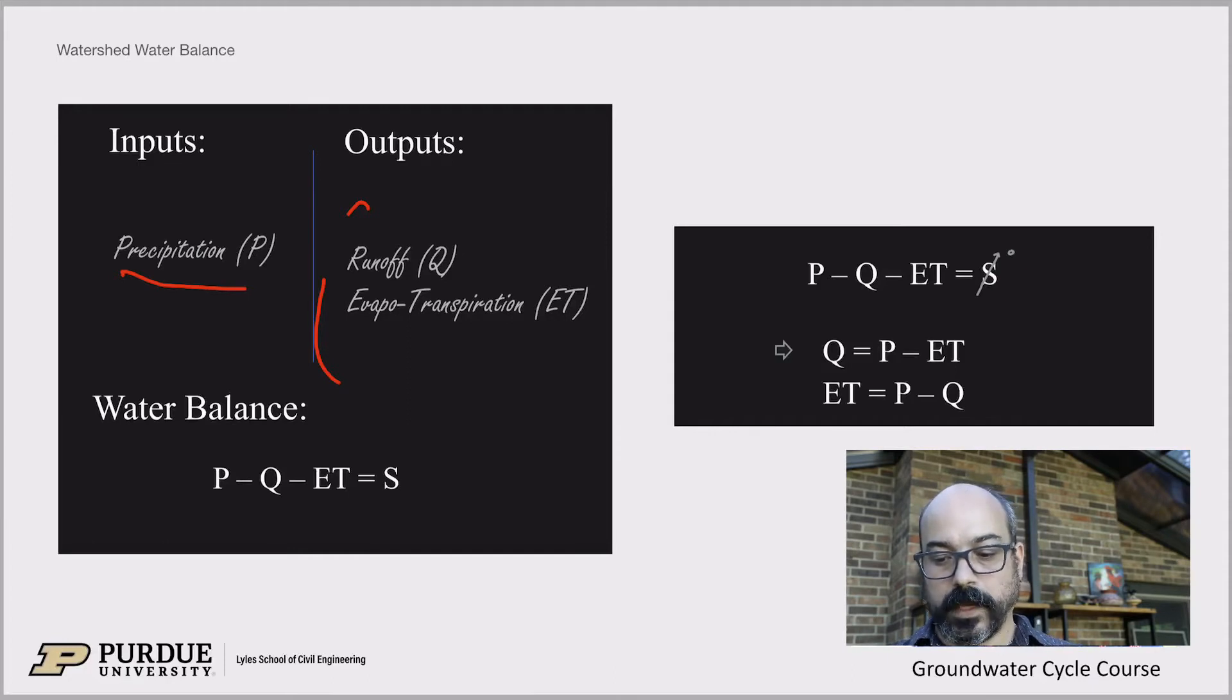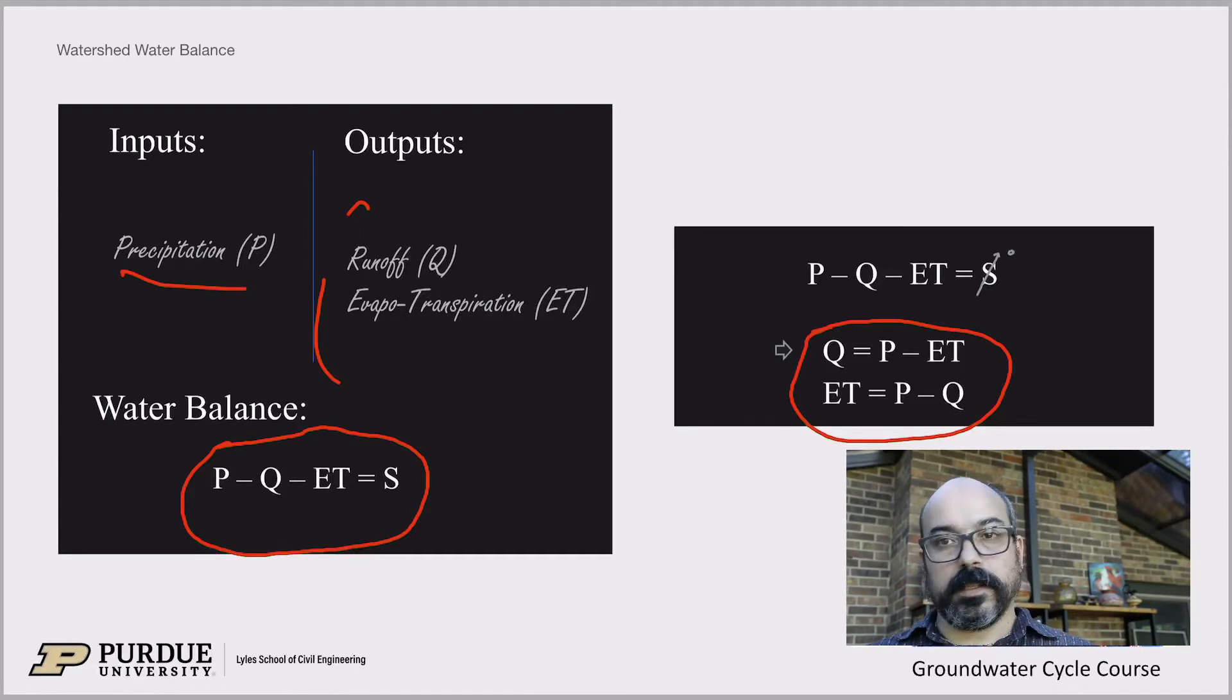And then some of it leaks to the groundwater. So we'll see how we measure groundwater recharge and how we can analyze that. But mostly runoff and leakage. So eventually that groundwater returns to the drainage. And so essentially all of it goes out eventually. So again, rainfall equals input, precipitation, output is runoff and evapotranspiration, essentially. And so the water balance at the watershed scale is P minus Q minus ET equals S, which is storage.